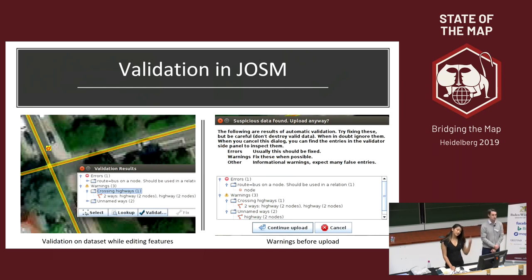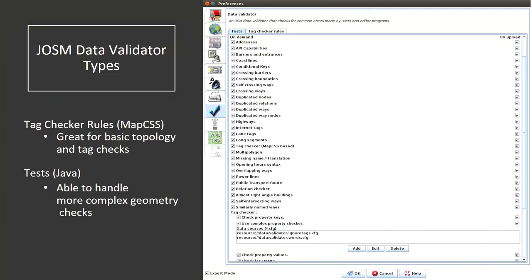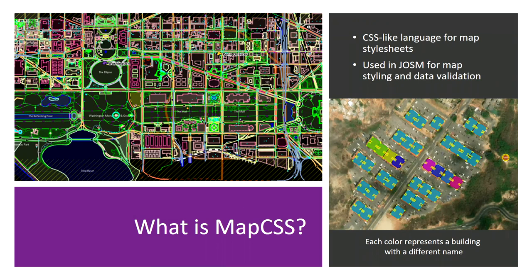JOSM's data validator allows you to validate your current data set as you are editing and also warns you before you upload the data if there are any issues that may need to be fixed. There are two types of data validators in JOSM, which you can find and enable in the preferences window: tag checker rules written in MapCSS, which are great for basic topology and tag checks, and tests written in Java to handle more complex geometry checks. MapCSS is a CSS-like language for map style sheets that allow you to specify how a given feature should be displayed. It's used in JOSM for map styling and highlighting data validation issues.